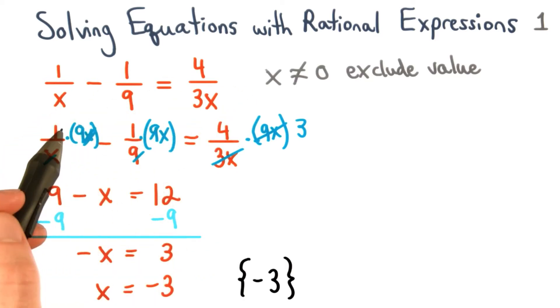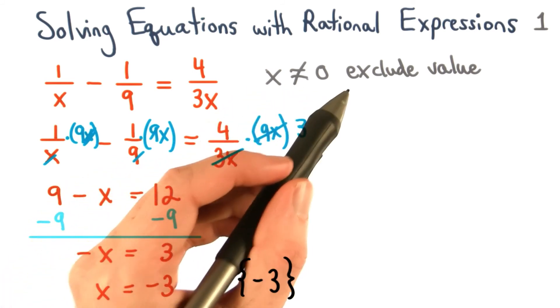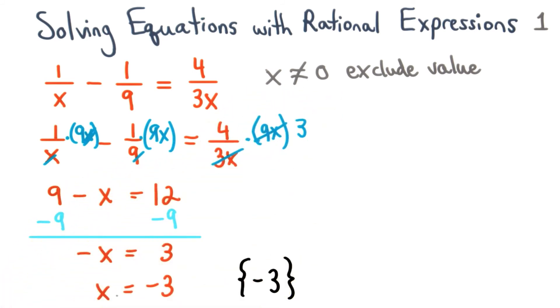For this original equation, x cannot equal 0—it's an excluded value. And since our answer was x equals negative 3, we're okay. We can keep this as our solution set.